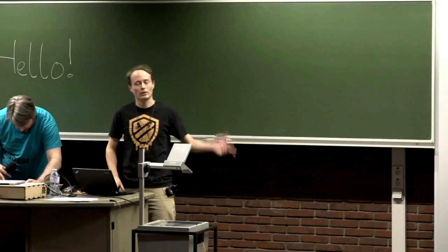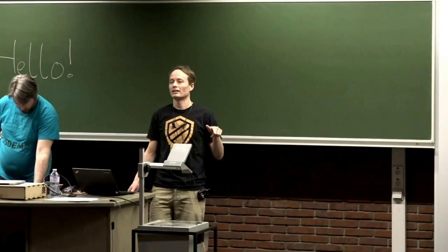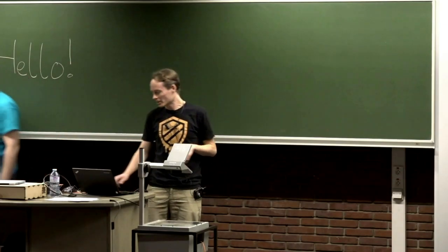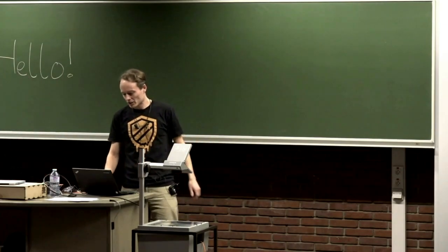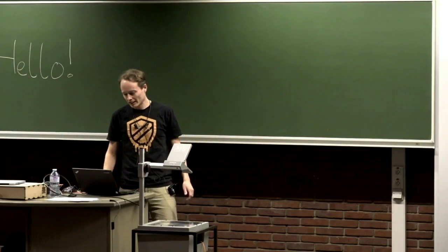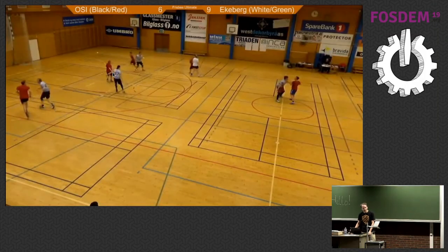The problem is, when I moved back to Norway where I live now and started playing tournaments, the stream basically looked like this. It's pretty much impossible to see anything. You can sort of see the players, but there's supposed to be a goal line here, and it's all smudged out.